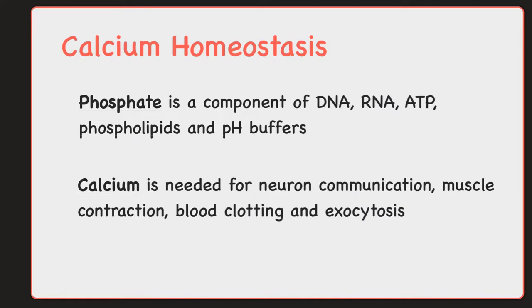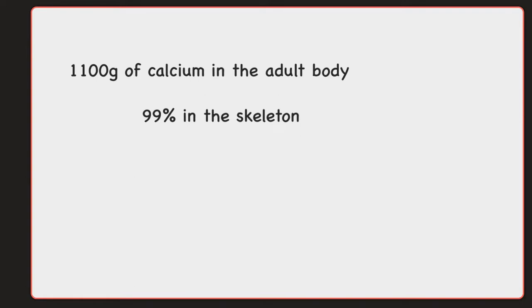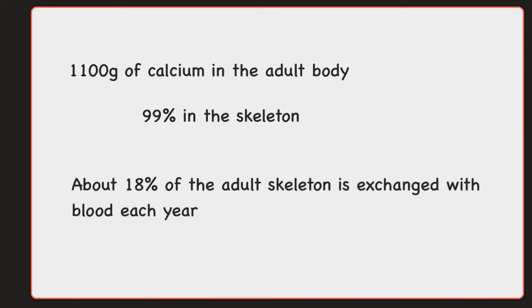Minerals are deposited in the skeleton in order to make bone, and we can also take them out as needed. So the bone is actually playing a huge role in the physiology of the body. There's about 1,100 grams of calcium in the adult body, and 99% of that is found in the skeleton. There is an easily exchangeable calcium ion, and there is also a hydroxyapatite reserve in the bone that is more stable and a little harder to break down. The hydroxyapatite is made of calcium as well but is a much more stable reserve, so it takes a little bit longer to break that portion down. About 18% of the adult skeleton is exchanged with blood each year, showing the constant work of osteoblasts and osteoclasts.